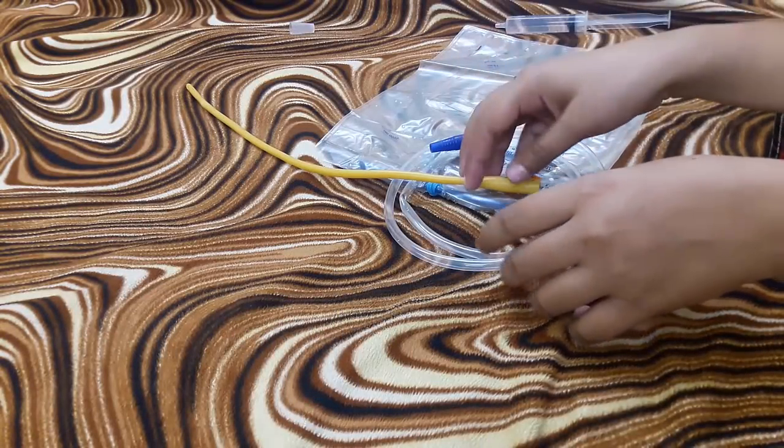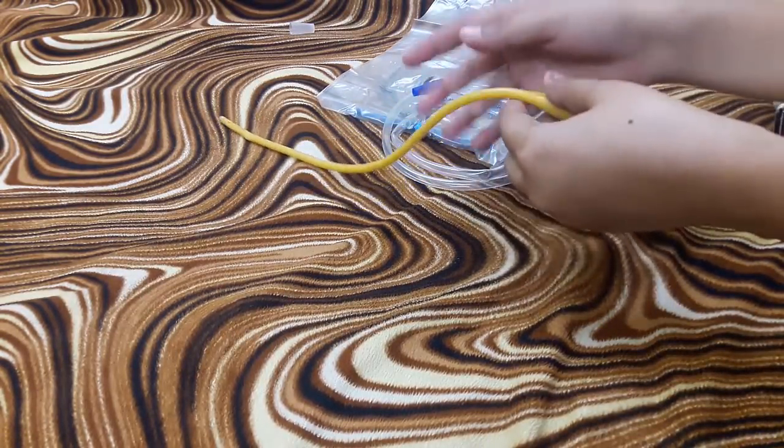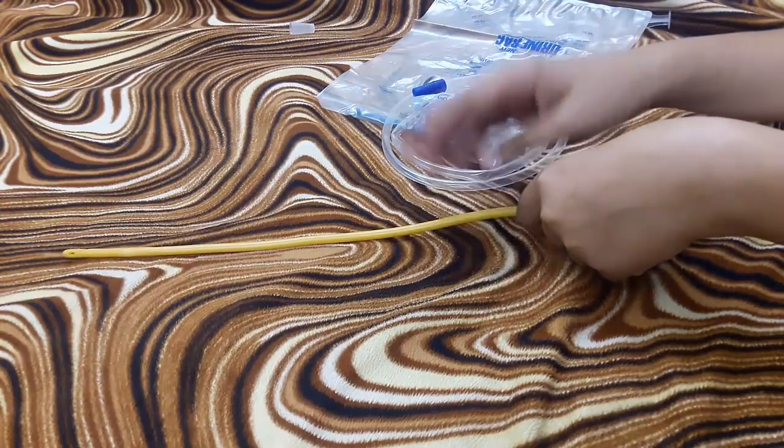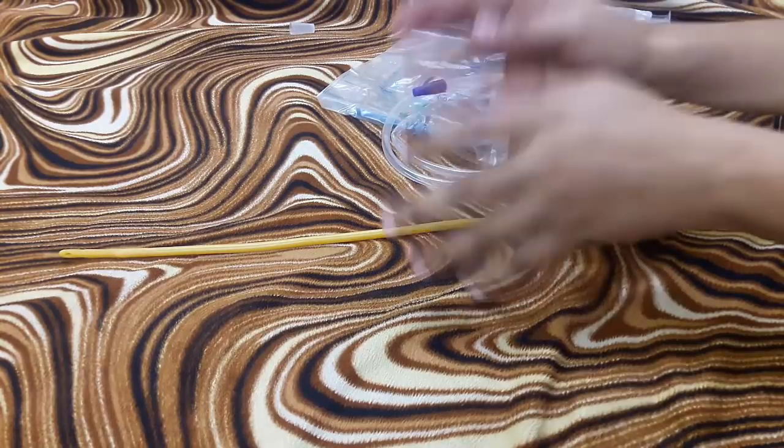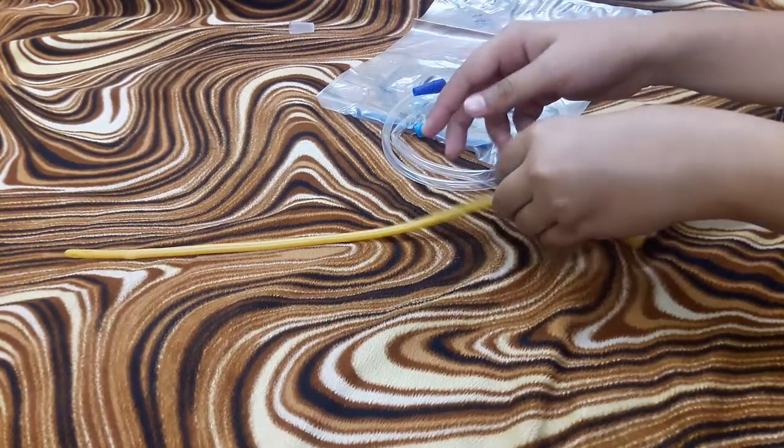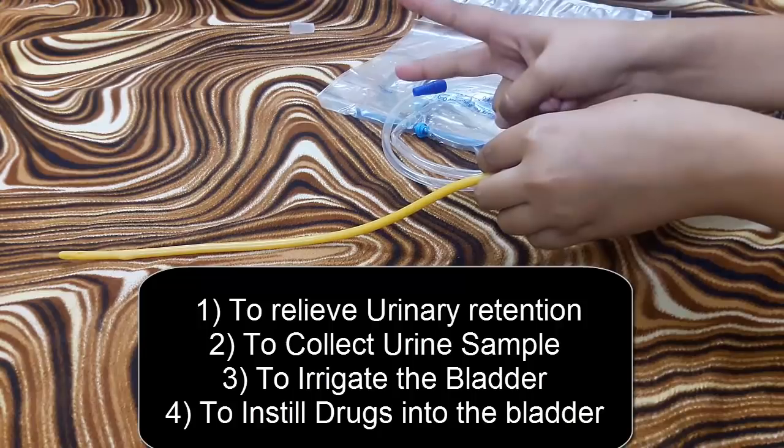Hello everyone, in this video I'm going to explain Foley catheter. First of all, what is a catheter? A catheter is a hollow tube, and Foley catheter is used to relieve urinary retention, to obtain urine for urine analysis, to irrigate the bladder, and to instill drugs into the bladder.